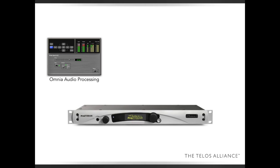Why? Because it's designed specifically for streaming — designed for a bit-rate-reduced codec like you have in an encoder. So it doesn't do clipping and it doesn't do simple look-ahead limiting. It's a very intelligent look-ahead limiting along with a three-band automatic gain control. There are different presets to choose from, and of course you can customize any of the presets that you like.